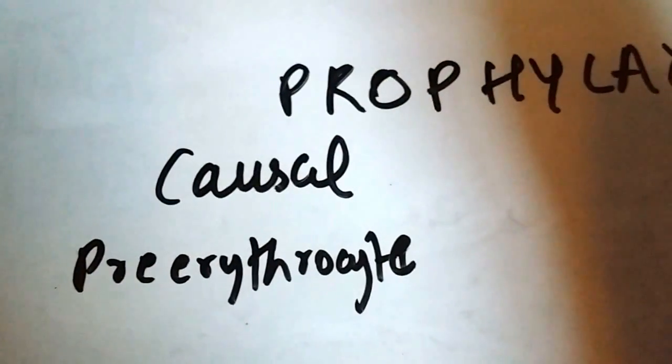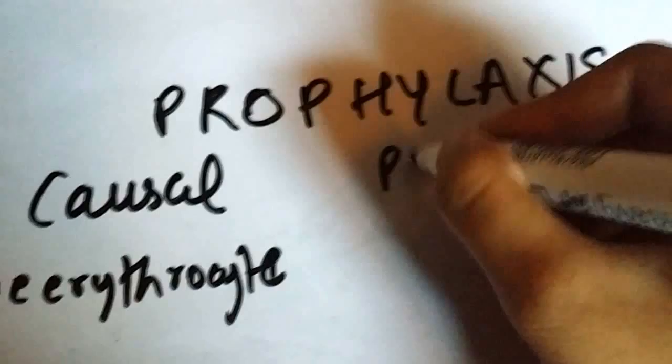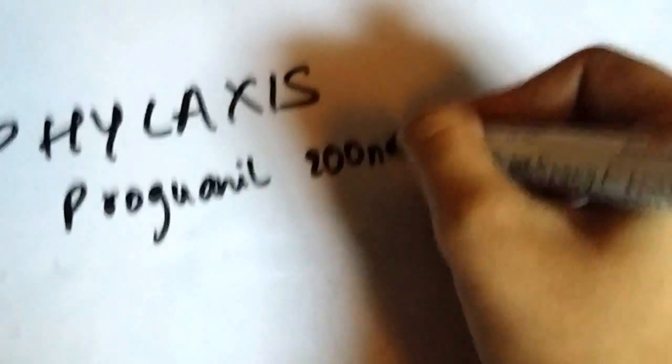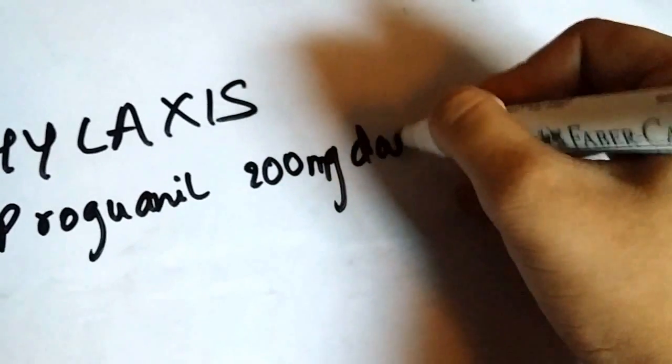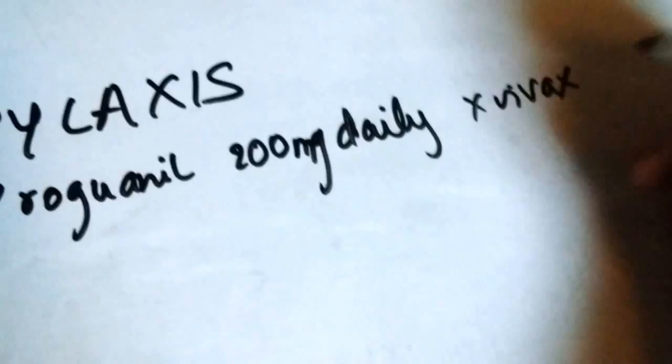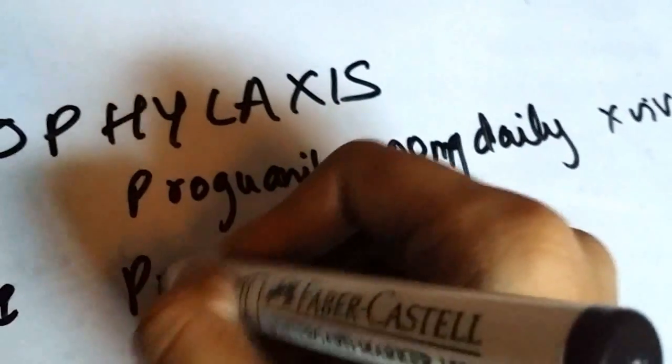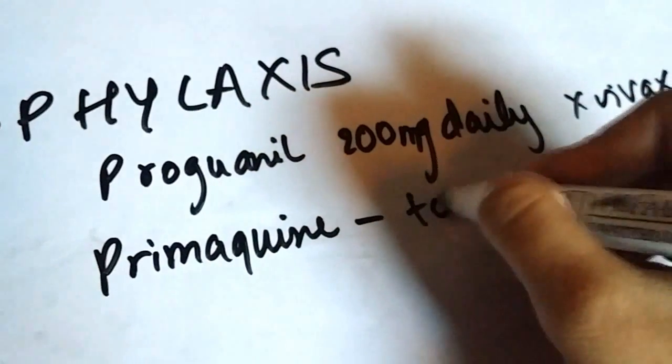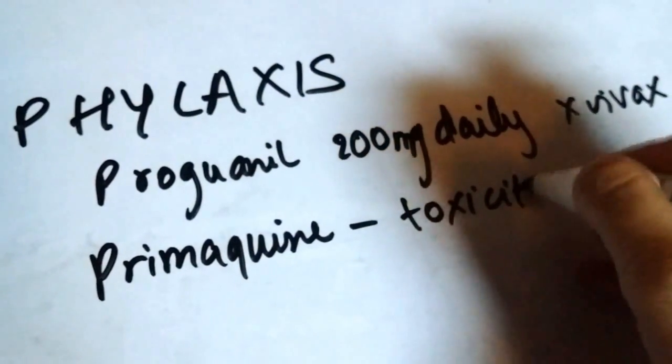In casual prophylaxis you target the pre-erythrocytic phase of the malarial parasite. The drugs used for casual prophylaxis are proguanil 200 milligrams daily, though it's not usually used that often because you have to administer it daily and it's not that effective against vivax malaria. The second drug is primaquine, but it's not used in mass prophylaxis because of all the toxicities of primaquine.